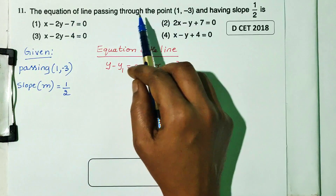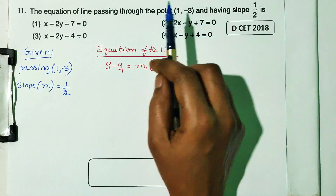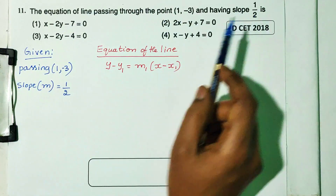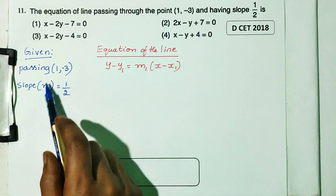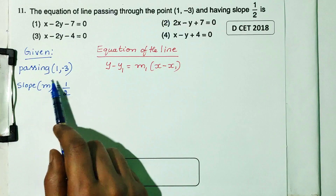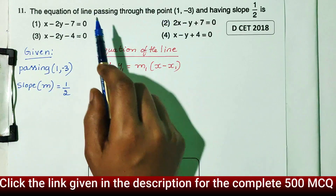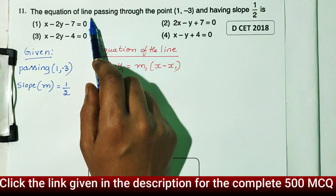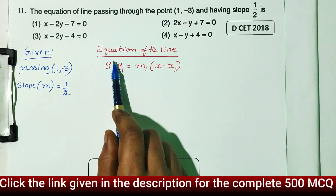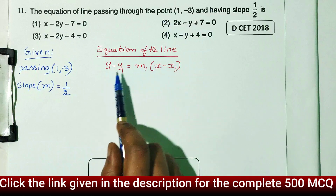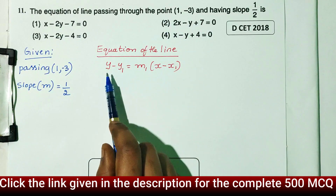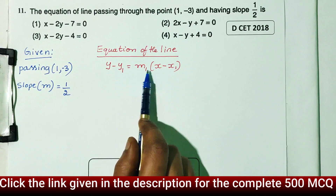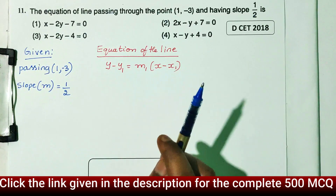Equation of line passing through one point and given slope. The formula for equation of line is: y minus y1 is equal to m into x minus x1.